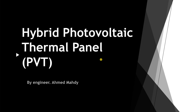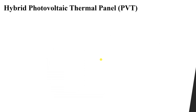Hi and welcome everyone. In this lesson we will talk about another type of PV panels called the hybrid photovoltaic thermal panel, abbreviated as PVT. This type of panel is used to do two functions: number one, it converts sunlight into electrical power, and at the same time it provides us with heated water or hot water.